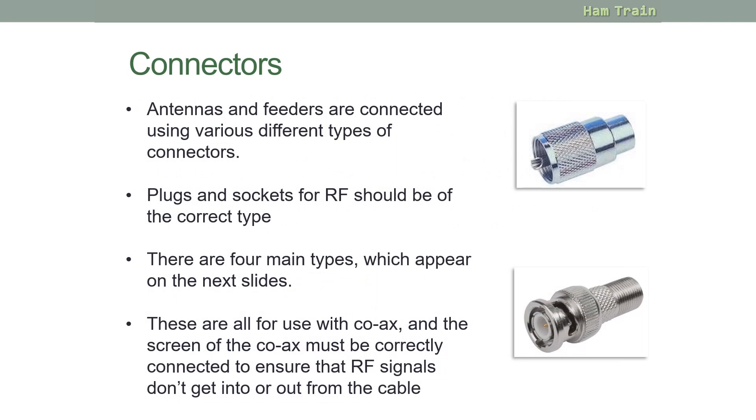Now let's look at the four different types of connectors used by amateurs. Antennas and feeders are connected using various different types of connectors. The plugs and sockets that you use for RF, radio frequencies, should be of the correct type. The four we're about to talk about are all for use with coax, and the screen of the coax must be correctly connected to ensure that RF signals don't get into or out from the cable.